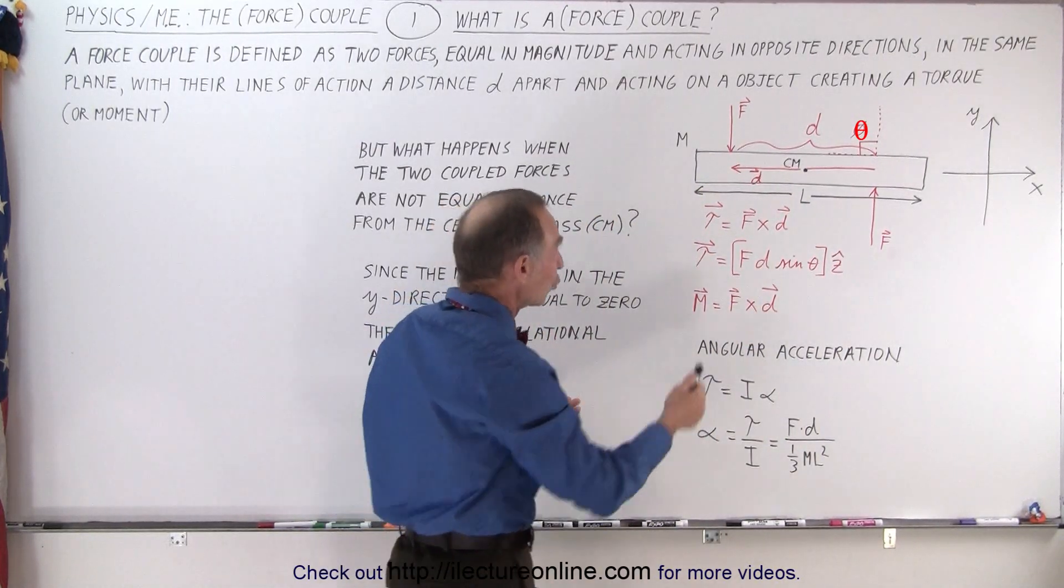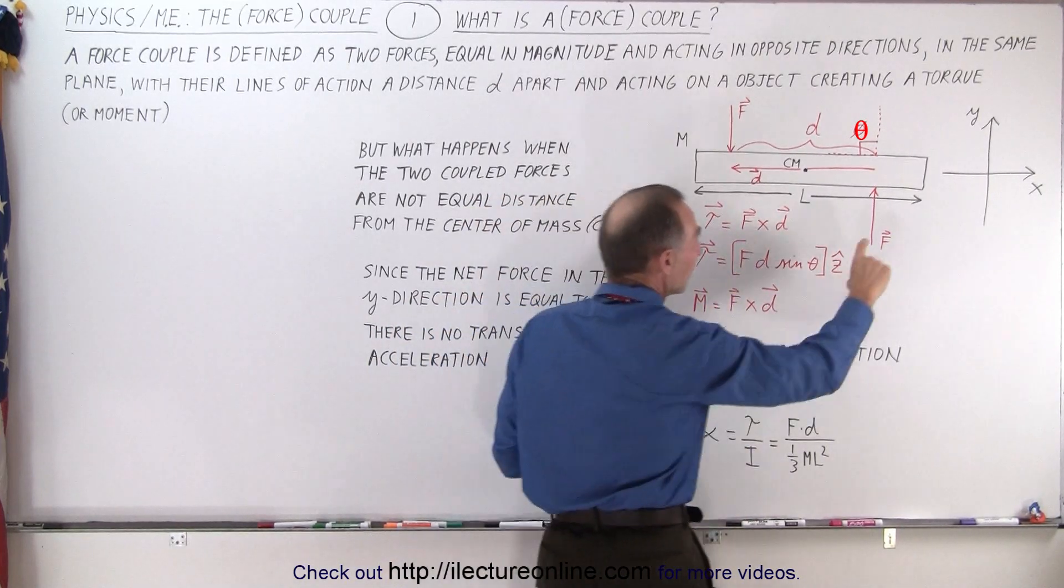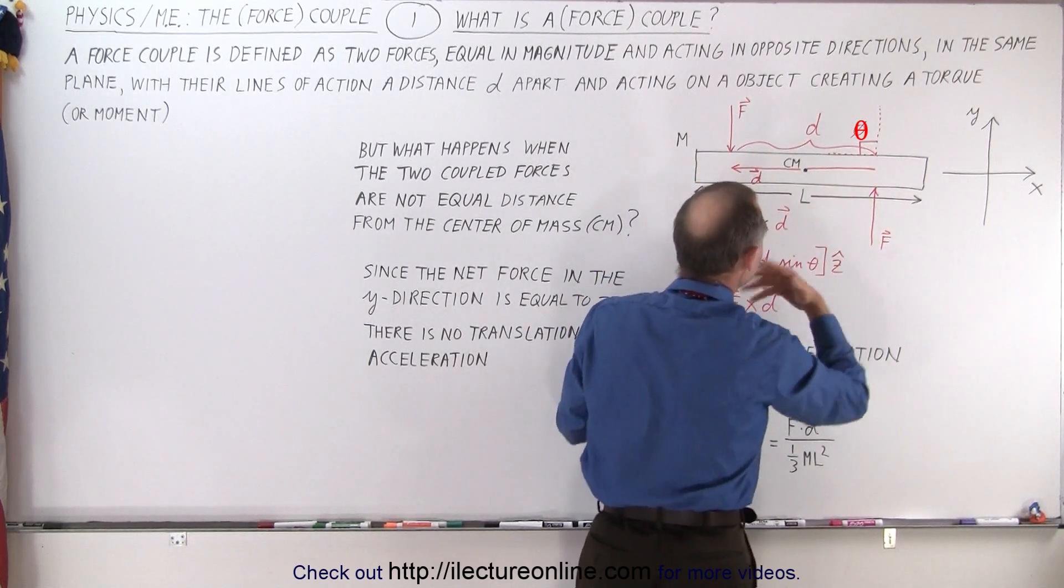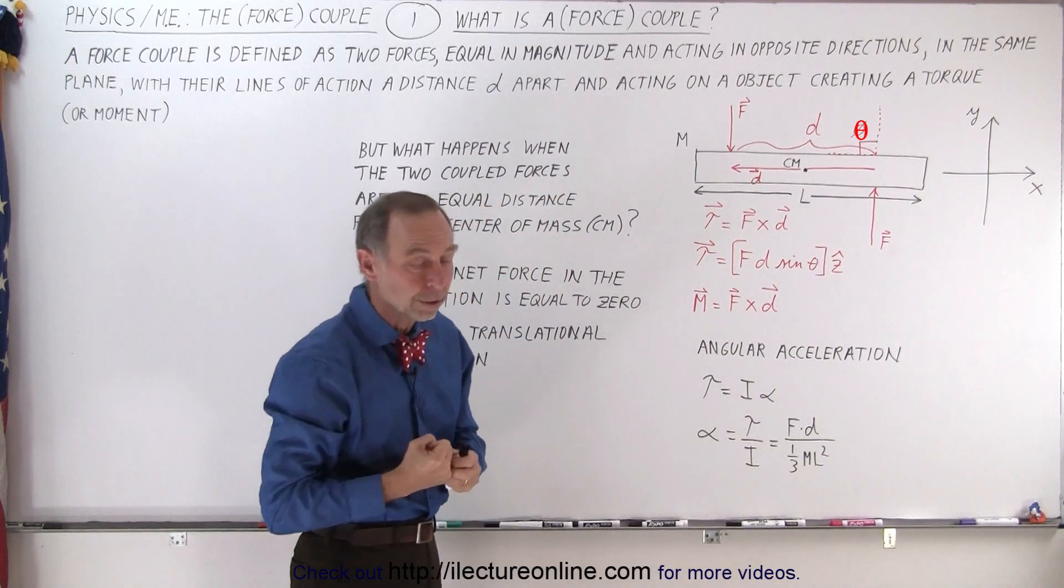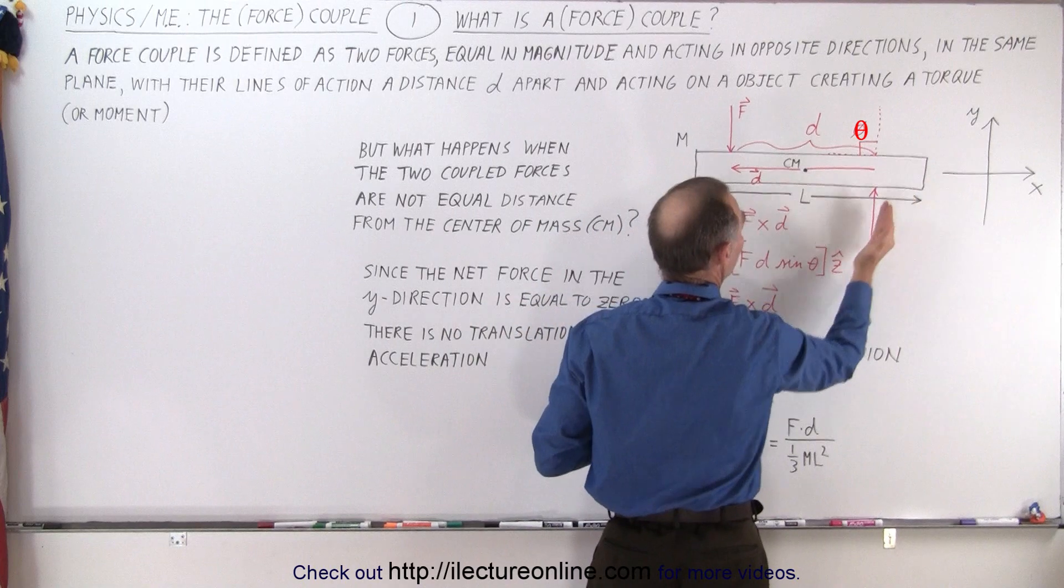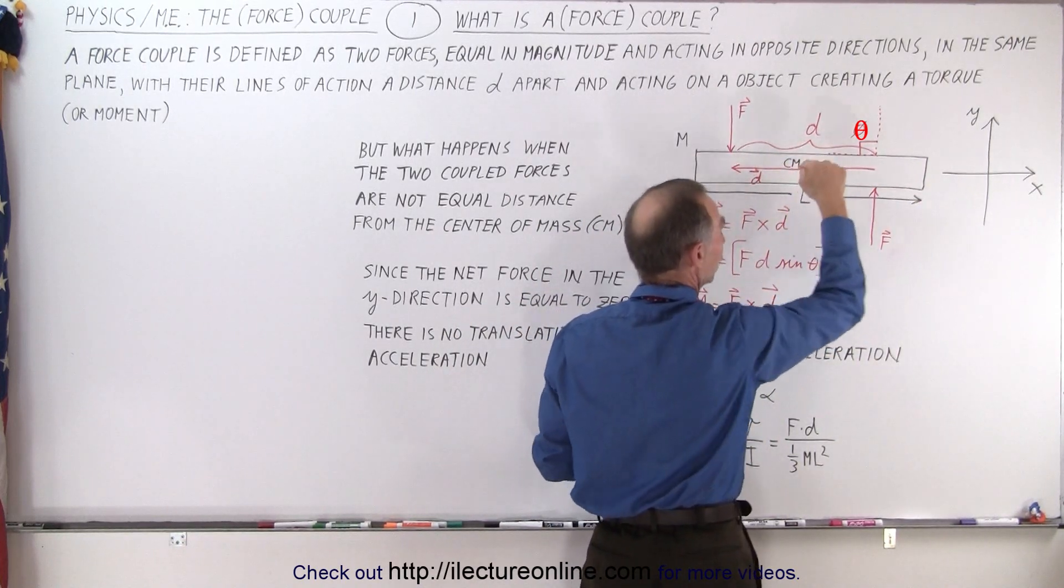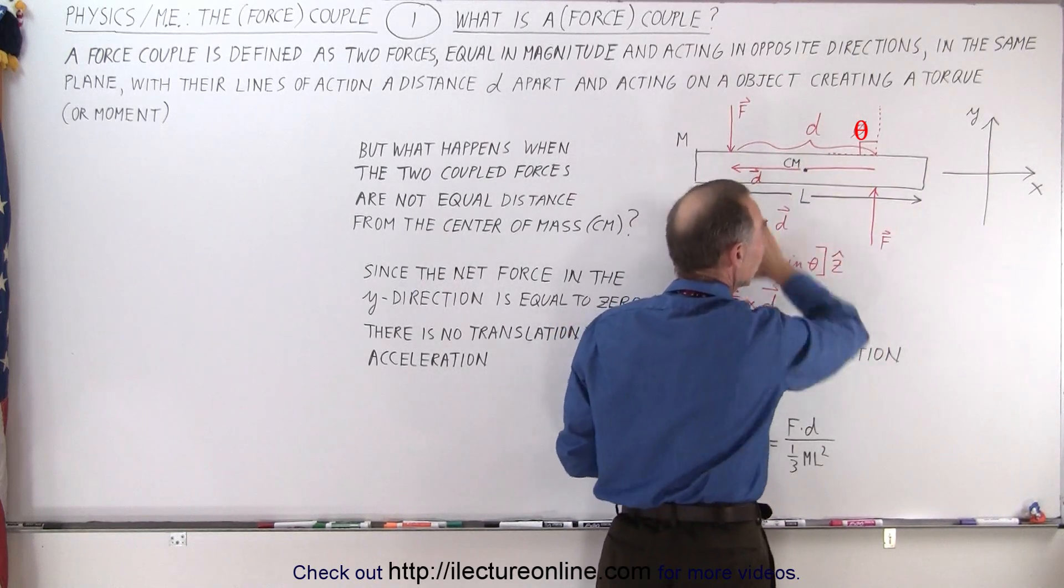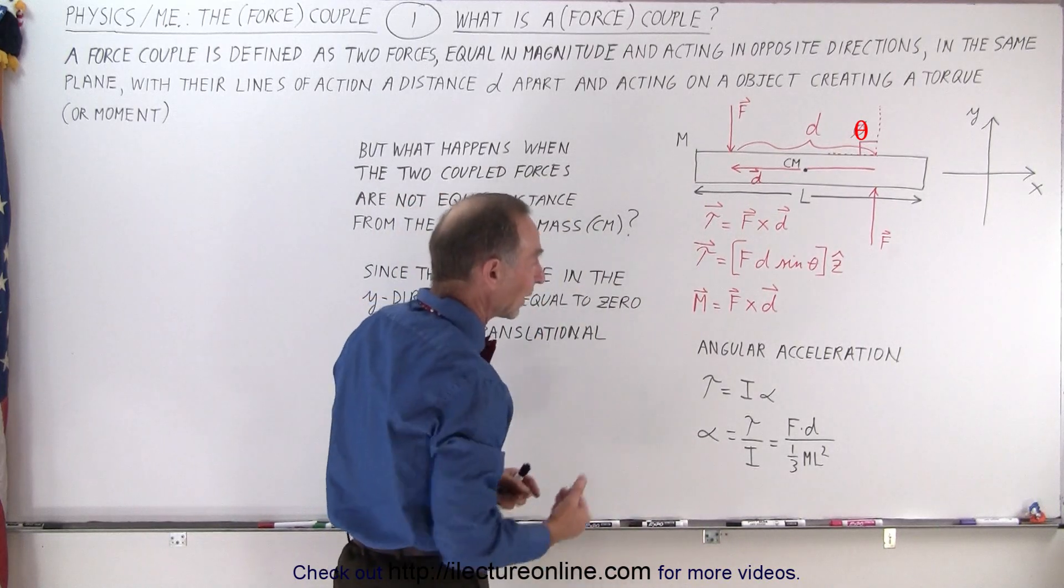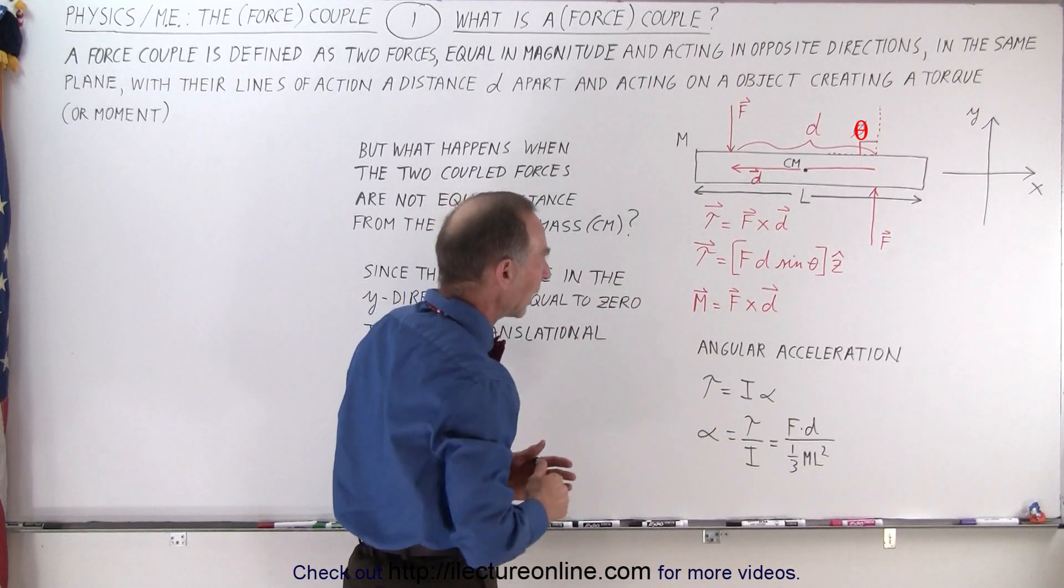And so they create a torque. You can see that those two forces will cause this bar to start rotating with the center mass staying in place. The definition of the torque would be the cross product of the force times the distance between them. So you take the magnitude of one of the forces, multiply it times the distance between the two, and that will be the magnitude of the torque.